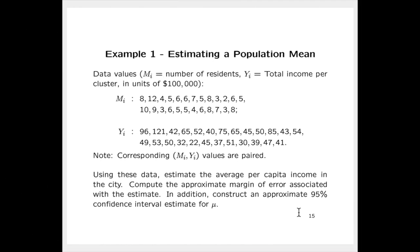The data are paired: cap M sub i is the number of residents on the selected block, and y sub i is the total income per cluster in units of hundreds of thousands of dollars. The corresponding M sub i and y sub i values are paired — for example, M1 equals 8 and y1 equals 96 are paired, as are 12 and 121, 4 and 42, and so forth.